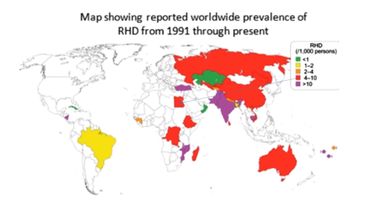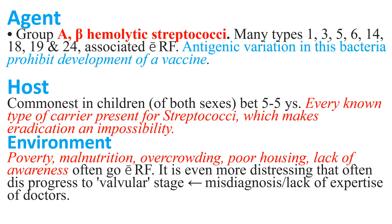A second map shows reported worldwide prevalence from 1991 to present — in Egypt it is now 4 to 10 cases per 1,000 persons. The causative agent is Group A beta-hemolytic streptococcus, with many types (1, 3, 5, 6, 14, 18, 19, and 24) associated with rheumatic fever. Antigenic variation in this bacteria prohibits development of a vaccine. Host: schoolchildren of both sexes aged 5 to 15 years. Every known type of carrier is present, making eradication impossible.